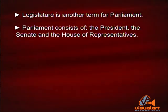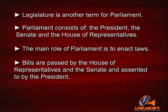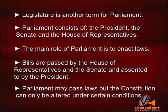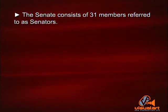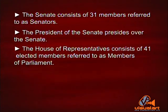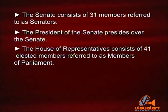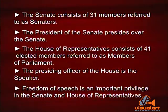Legislature is another term for Parliament. Parliament consists of the President, the Senate, and the House of Representatives. The role of Parliament is to enact laws. Bills are passed by the House of Representatives and the Senate and assented to by the President. Parliament may pass laws, but the Constitution can only be altered under certain conditions. The Senate consists of 31 members referred to as Senators. The President of the Senate presides over the Senate. The House of Representatives consists of 41 elected members referred to as members of Parliament. The presiding officer of the House is the Speaker. Freedom of speech is an important privilege in the Senate and House of Representatives.